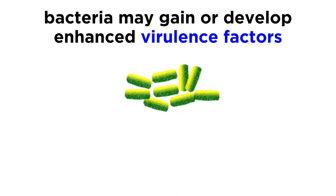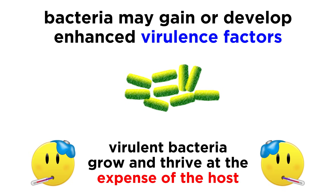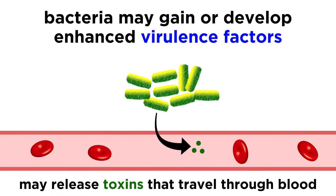In many cases, bacteria might gain or develop enhanced virulence factors, which allow them to more effectively cause disease. Virulent bacteria, by definition, grow and thrive at the expense of their host. For instance, some bacteria might release toxins that can travel through the blood, causing life-threatening disease.